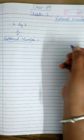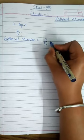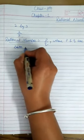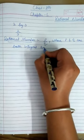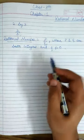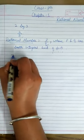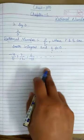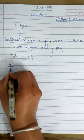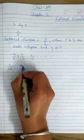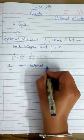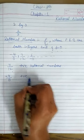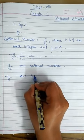Rational numbers are those numbers that can be expressed as P by Q, where P and Q are both integers and Q is not equal to 0. For example, minus 4 by 5, 7 by 12, 6 by minus 11, and so on. These numbers are called rational numbers. Rational numbers with a positive sign are known as positive rational numbers and rational numbers with a negative sign are called negative rational numbers.